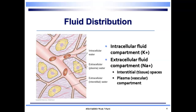A quick review on fluid distribution: we have our intracellular fluid compartment, which is primarily where potassium is housed, and our extracellular fluid compartment, where sodium is housed. The intracellular compartment contains fluid within all the cells in our bodies — it's larger, comprising two-thirds of the body's water, with a high concentration of potassium. The extracellular compartment comprises the remaining one-third of body water, including interstitial spaces, plasma, and vascular compartments, and has a high concentration of sodium.